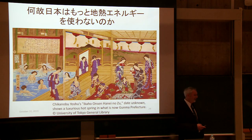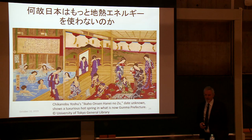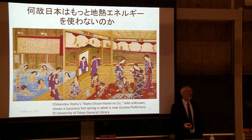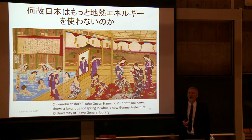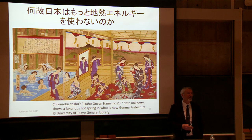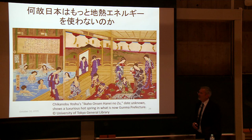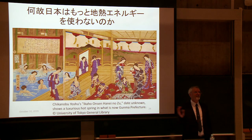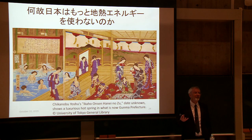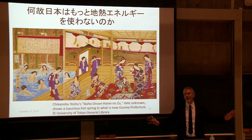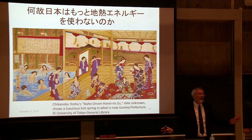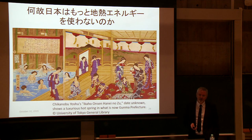Let's move on to onsens. This is a significant political and social situation unique to Japan, which is a barrier to larger development of geothermal energy. Everybody in Japan loves onsens — the Japanese public understands and likes onsens very much. Any suggestion that geothermal development would be bad for onsens is strongly resisted, and that has been a significant source of hindrance over the last 30 years.